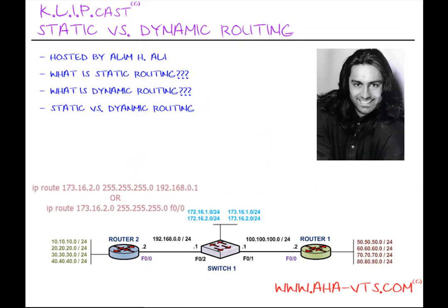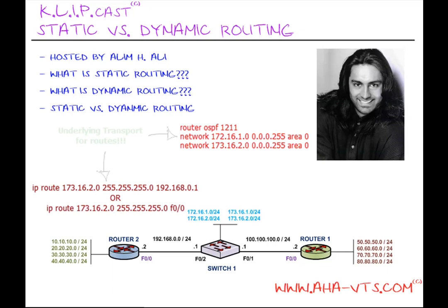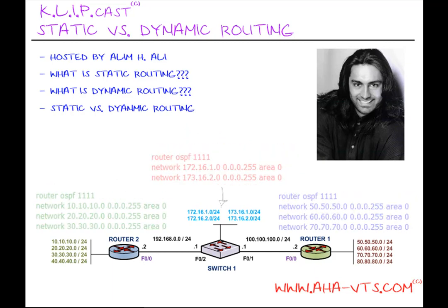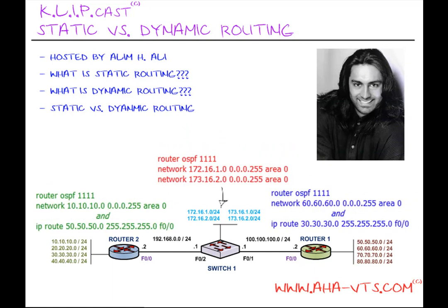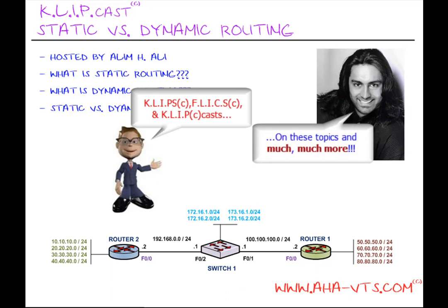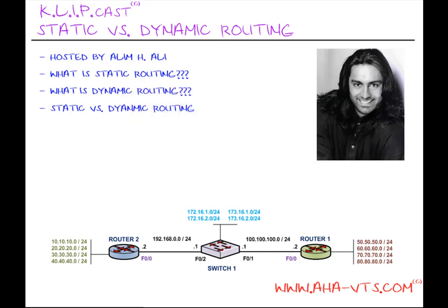Static and dynamic routing are the underlying transport of data between end stations and devices. You can have a purely static environment, a dynamic one, or a hybrid using both. You can also visit ahavts.com and look out for future clips, flicks, and clip casts on these topics and much more. I hope this clipcast on static vs. dynamic routing was informative, and I'd like to thank you for viewing. Thank you.